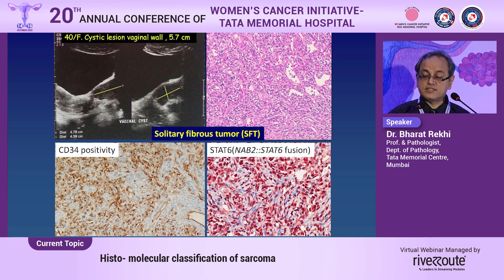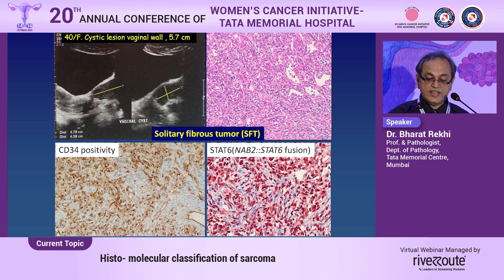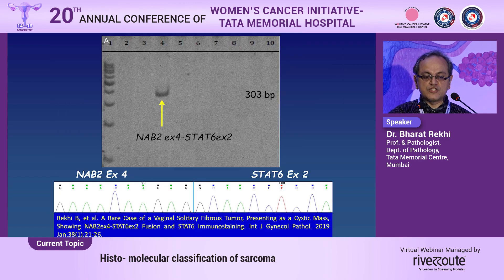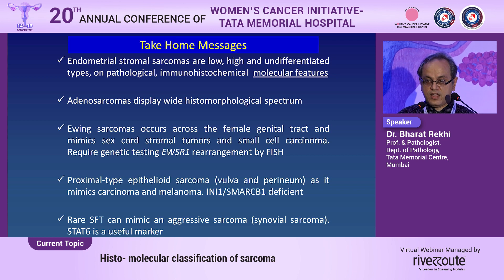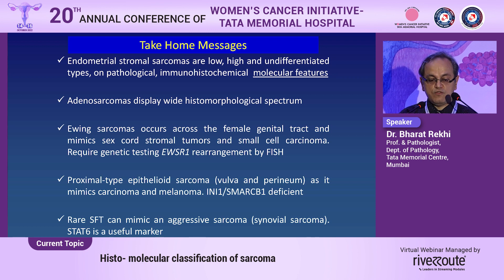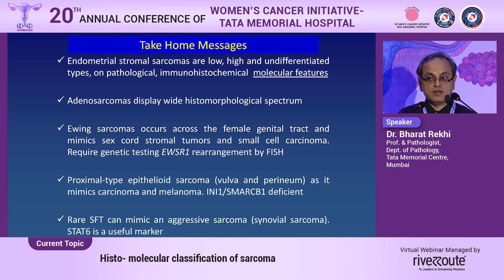A final case appearing very cellular and sarcoma-like was CD34-positive. STAT6 immunohistochemistry — a 'magic marker' reflecting the underlying NAB2-STAT6 fusion — confirmed this as a solitary fibrous tumor mimicking synovial sarcoma. In summary: endometrial stromal sarcomas are low- and high-grade, with undifferentiated when molecular stratification is not possible. Adenosarcomas show a wide histomorphological spectrum. Ewing sarcomas can occur across the entire female genital tract and should be confirmed with EWSR1 rearrangement by FISH. Proximal-type epithelioid sarcomas occur in vulvar and perineal locations and are INI-1-deficient. Rare SFTs in the female genital tract can mimic synovial sarcoma, and STAT6 is a useful marker. Thank you very much.